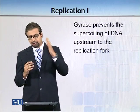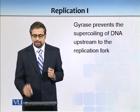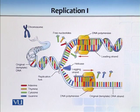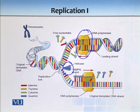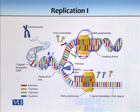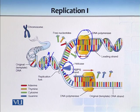Further upstream of the replication fork, gyrase is basically preventing supercoiling of the DNA. If you look at this image very carefully, what you see is DNA helicase unzipping the DNA, while DNA polymerase is sitting there adding new nucleotides. DNA gyrase is not mentioned in this image, but otherwise it is either uncoiling the DNA or preventing further supercoiling. That is how replication proceeds. One of the major fundamental concepts to understand — and the most important — is the functioning of DNA polymerase.